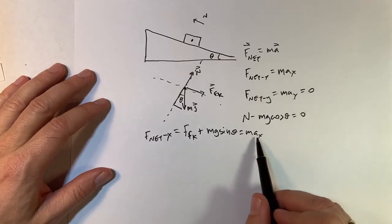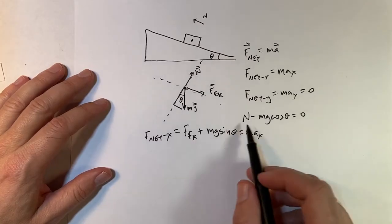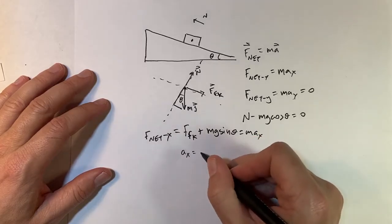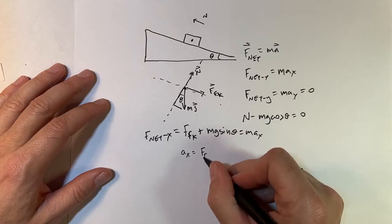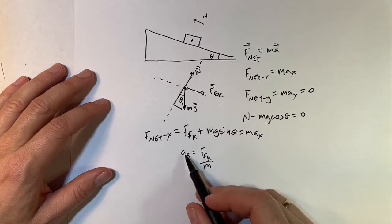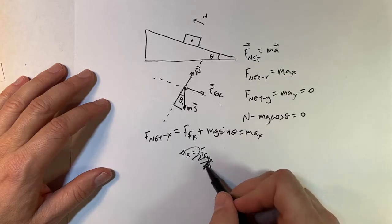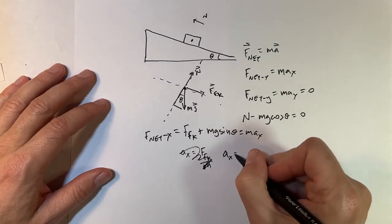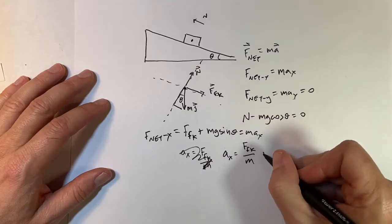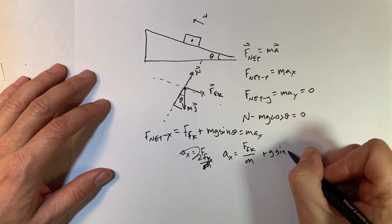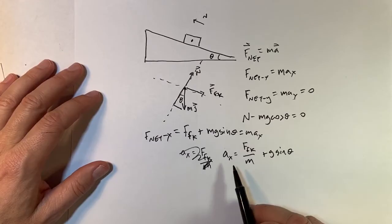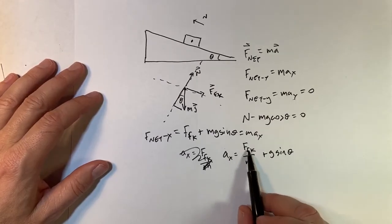I want to find the acceleration. So if I want, let's divide by the mass. So I get ax equals f friction over m. Let's rewrite that. Ax equals f friction kinetic over m plus g sine theta. And let's say I know theta, I know the mass. That's something we can get later. But what about this friction force?